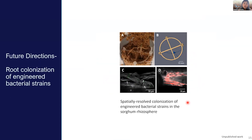Another future direction is looking at root colonization of engineered bacterial strains. Here I have used sand as the growth medium, again using the same riser grids and 3D printed pots. We have used fluorescently labeled microbes — a GFP-tagged version shown in green and an RFP-tagged version shown in red — to understand the localization patterns of these engineered strains. We are also coupling this with cell sorting to understand the numbers along the roots.